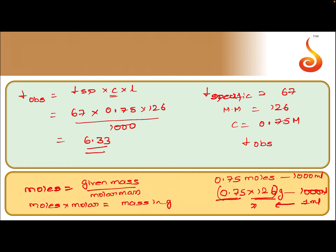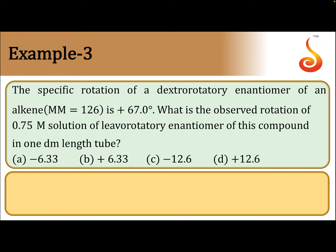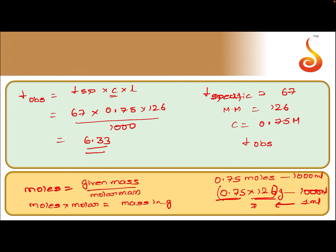The observed rotation comes out to 6.33. But here, the specific rotation of the dextrorotatory enantiomer is given as plus 67, and they are asking for the observed rotation of the levorotatory enantiomer. If dextrorotatory is plus, levorotatory will be minus. So the observed rotation of the levorotatory compound is minus 6.33.